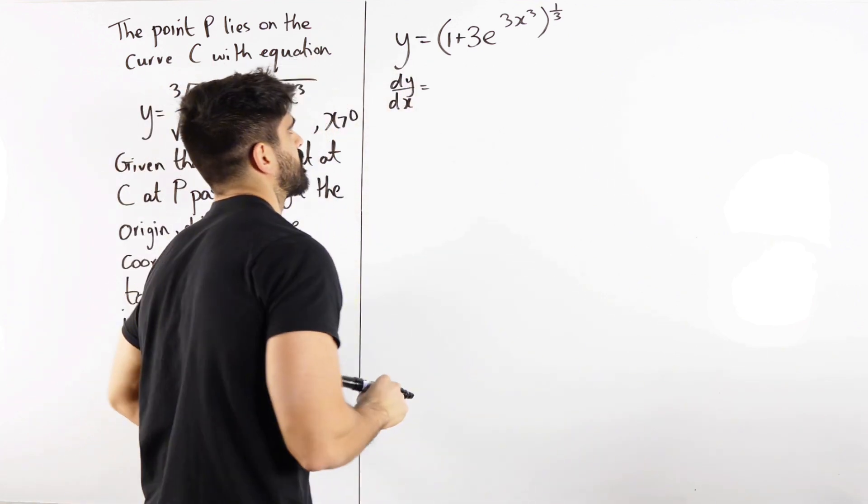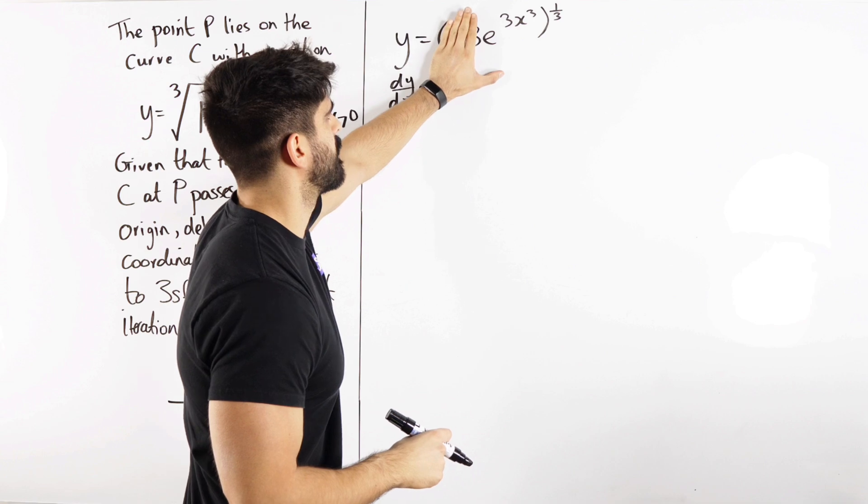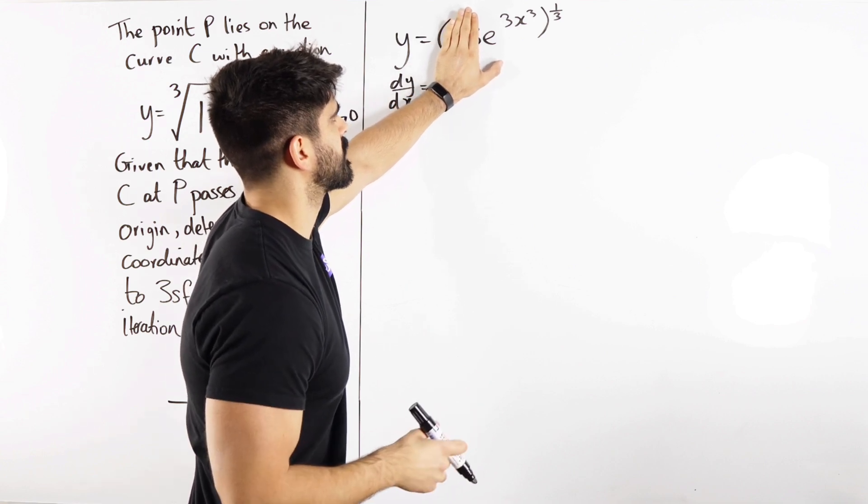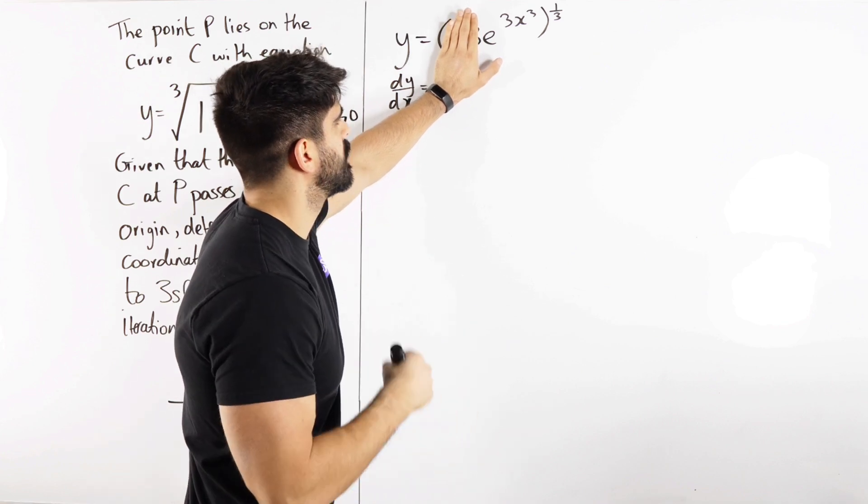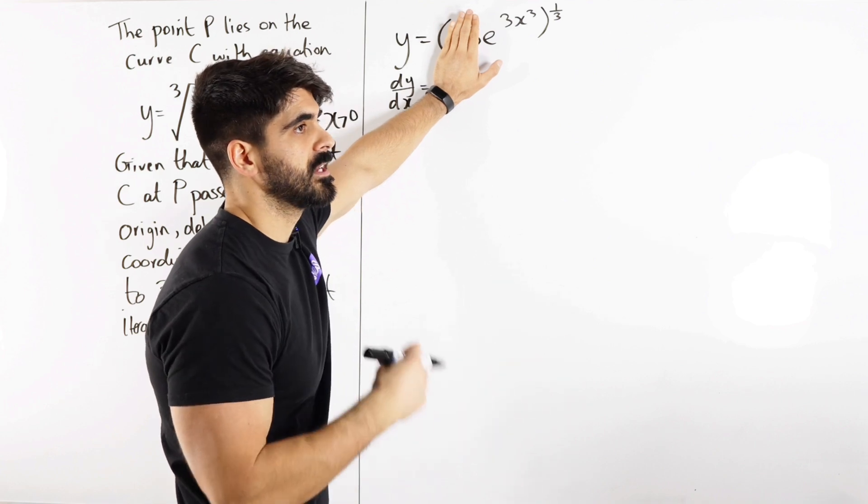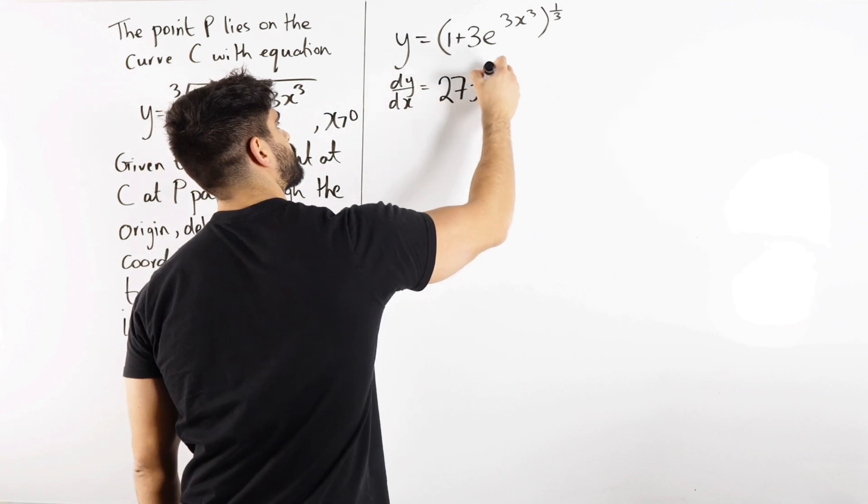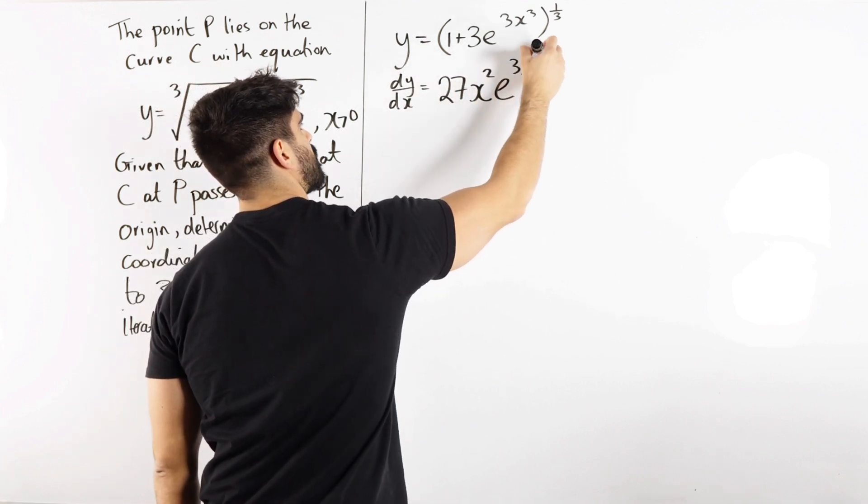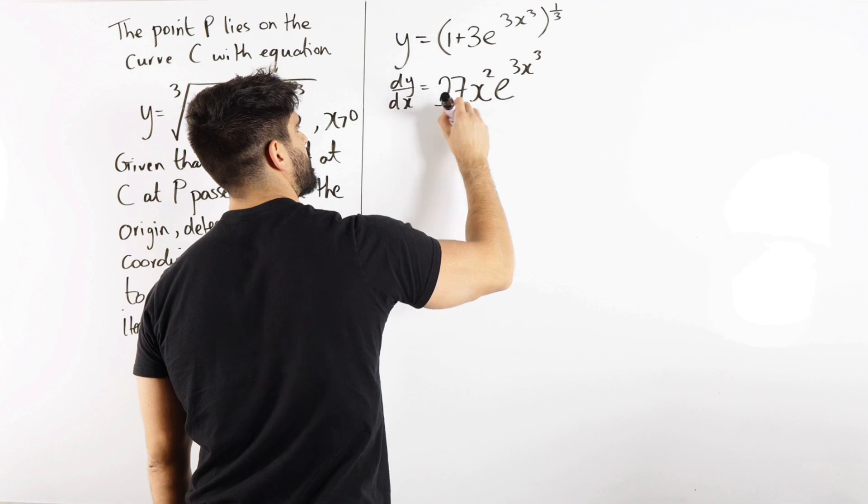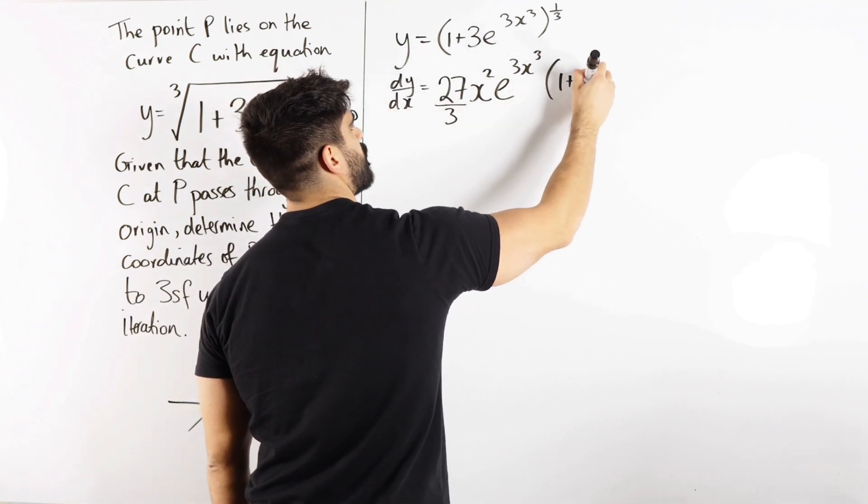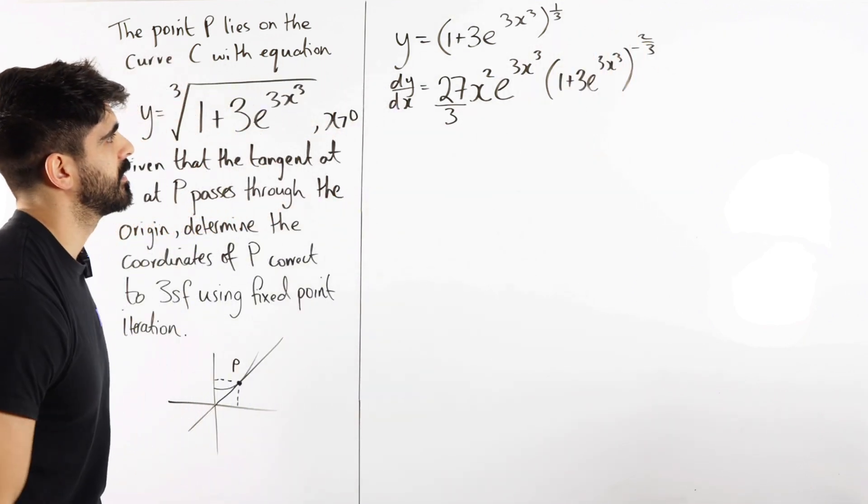So we're going to differentiate that. We're going to differentiate what's on the inside first. It's a power function. So we cover that up, we're going to differentiate this. Now 3 is just a multiplier, so forget about that. We differentiate e to 3x cubed. We differentiate the power first, 3x cubed, bring down the 3, that's 9, knock one off the power, 9x squared. 9x squared times 3 is 27x squared e to 3x cubed. Then we bring down the power, bring down the third which is just going to make that over 3, then knock one off the power.